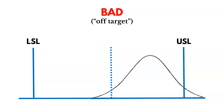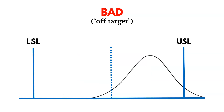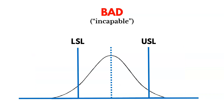When we're off target, we just have to recenter our process. This is typically easier to address than being incapable, where we're seeing lots of variation and being outside of those specification limits on both sides — that is much more difficult to address. Being off target, we can just recenter.